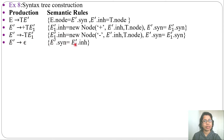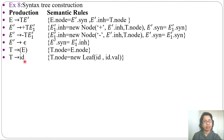Next, E' derives epsilon, so E' synthesized equals E' inherited. Next production: T derives start-bracket E end-bracket, T node equals E node. Next, T derives id, T node equals new-leaf(id, id.value). Here it will create a leaf. New node will create an interior node; new-leaf will create a leaf. I already discussed this in the previous lecture — go through that lecture first, then come to this one.